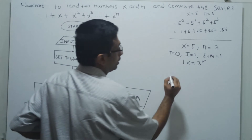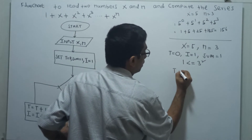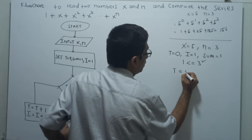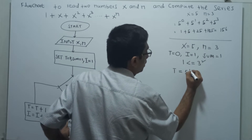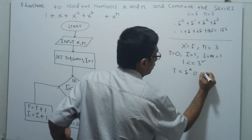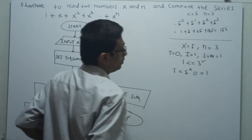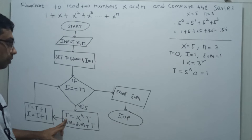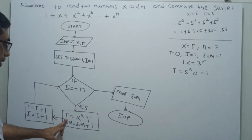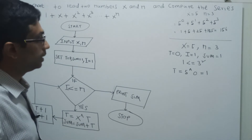So t equal to x power t, that means 5 to the power 0, which is equal to 1. Now we are calculating sum equal to sum plus t.